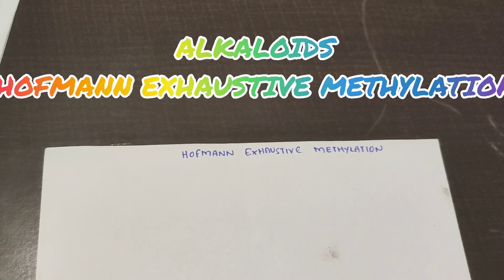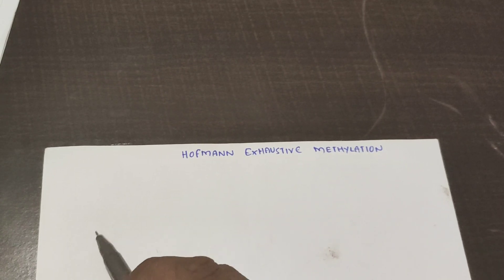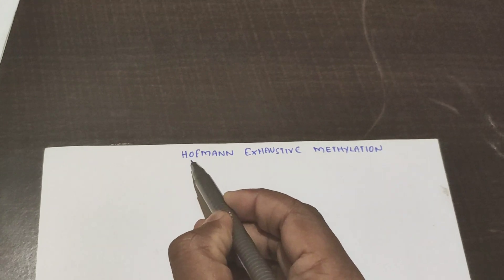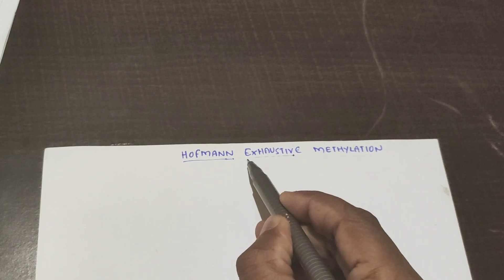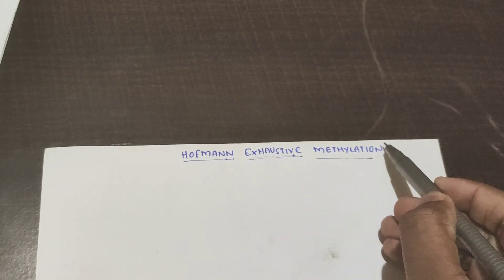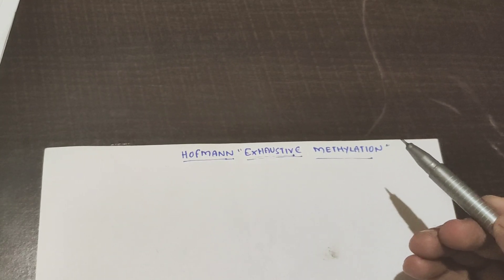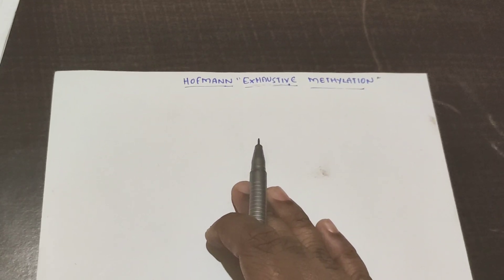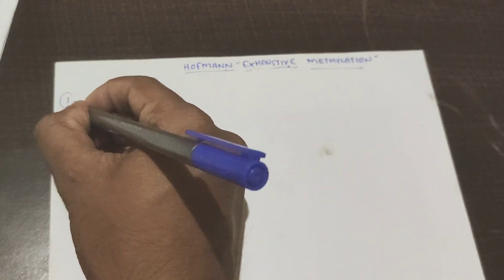Welcome to Win Chemistry. Today we are going to discuss one of the degradation methods of alkaloids — that is Hofmann Exhaustive Methylation. As the name says, Hofmann is a scientist who has done this work. Exhaustive methylation — remember this term, I will explain why it is called exhaustive methylation. It is a very simple mechanism and degradation method, and it usually comes for examination for five marks and even competitive exams.